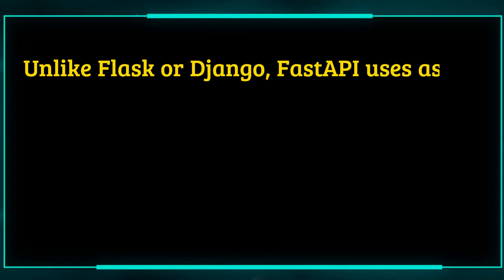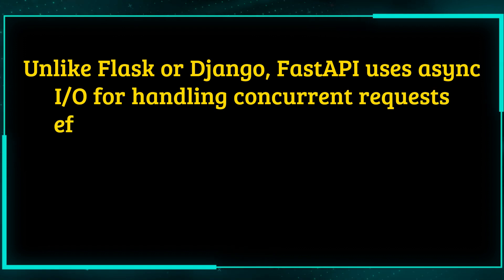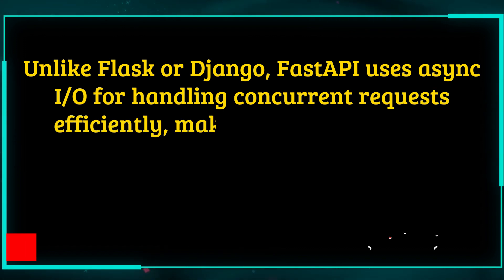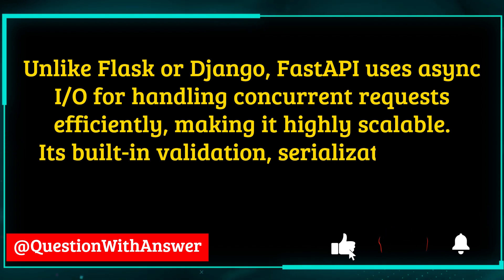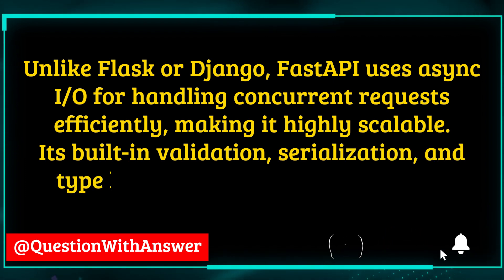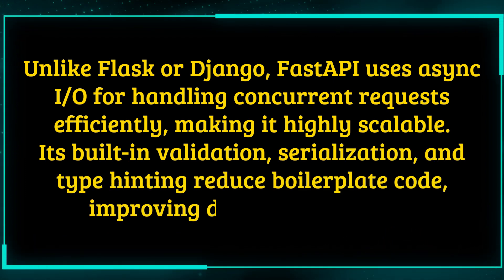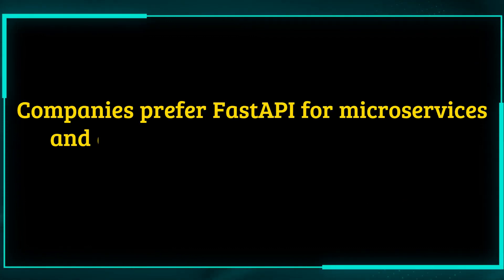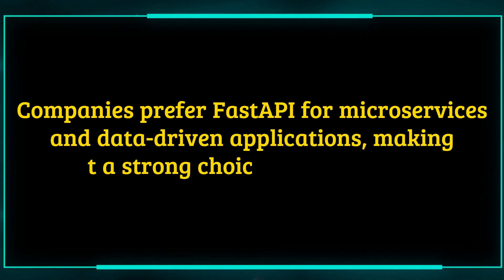Unlike Flask or Django, FastAPI uses AsyncIO for handling concurrent requests efficiently, making it highly scalable. Its built-in validation, serialization, and type hinting reduce boilerplate code, improving development speed. Companies prefer FastAPI for microservices and data-driven applications, making it a strong choice in interviews.